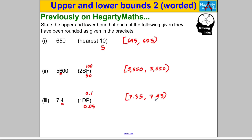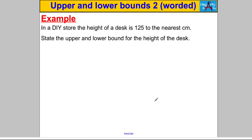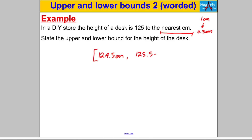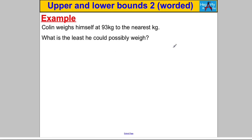Let's try them. In the DIY store, the height of a desk is 125 centimeters to the nearest centimeter. State the upper and lower bounds for the height of the desk. We've been told it's been measured to the nearest centimeter — half that to get 0.5 centimeters. Subtract it to get the lower bound and add it to get the upper bound: lower bound is 124.5 centimeters and upper bound is 125.5 centimeters.